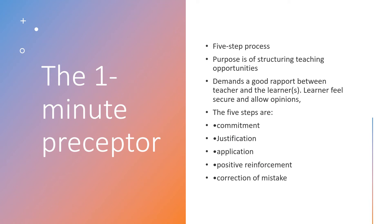The one-minute preceptor is a five-step process. The five steps are: commitment, justification, application, positive reinforcement, and correction of mistakes. The purpose is a structured teaching opportunity. It requires good rapport between the teacher and the learner, so the learner feels secure and able to ask questions or share their opinion. This involves asking a question and letting the learner come up with an answer — they commit to the answer, justify why they think this method is better, explain how it applies in the clinical setting, and if the teacher thinks it's not correct, they correct the learner so they're learning from the process.